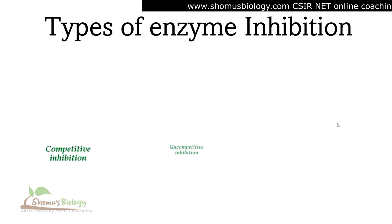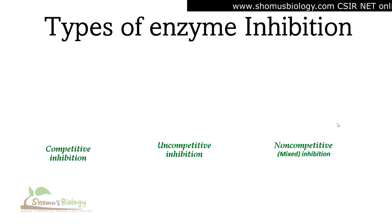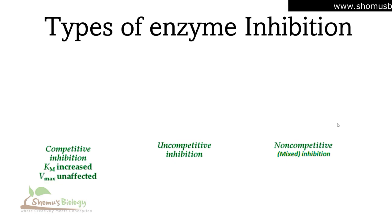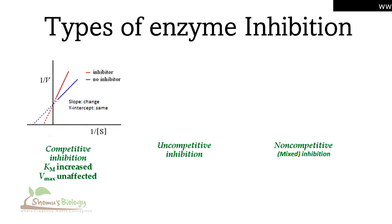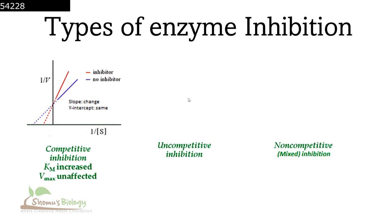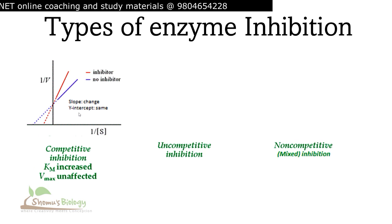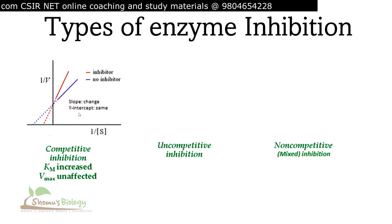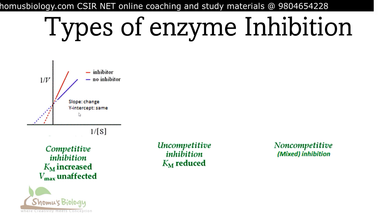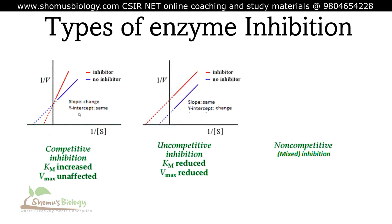In competitive inhibition, the Km value is increased but Vmax remains unaffected. On the double reciprocal plot, the lines intersect at the y-axis — forming an X-shaped crossing of the inhibited and uninhibited lines. Both lines meet at the same y-axis point, confirming Vmax is unchanged, but Km increases. Since Km reflects the enzyme's affinity for its substrate, an increased Km means the enzyme has lower affinity for its substrate.